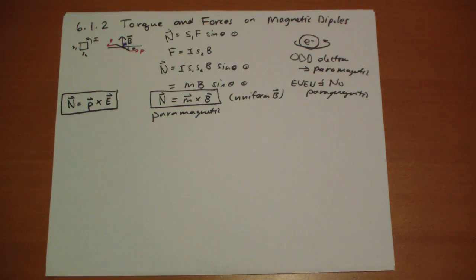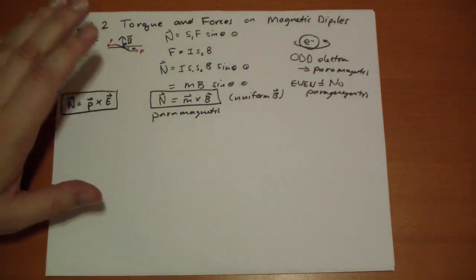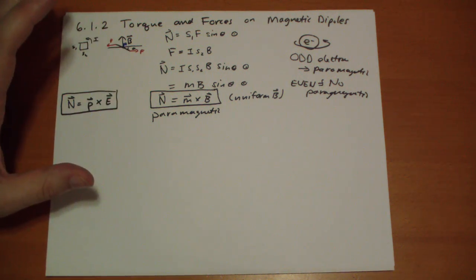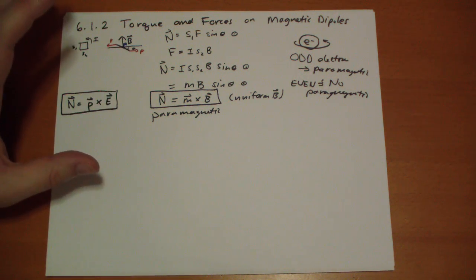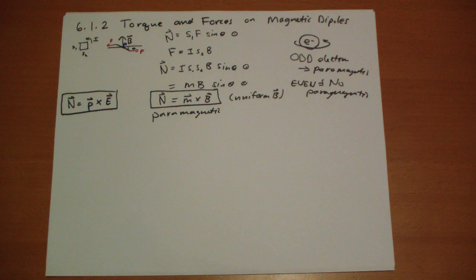Hi, this is Jonathan Gardner. We're covering section 6.12 from Griffith's Introduction to Electrodynamics. We've already discussed how dipoles behave in uniform magnetic fields, and we're going to talk about non-uniform magnetic fields next.